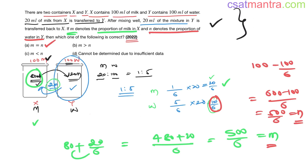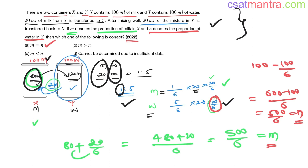To recap: initially 100 ml of milk in X; after transferring 20 ml, X has 80 ml. Y has 20 ml milk and 100 ml water in ratio 1:5. When transferring 20 ml of mixture back, milk taken = 1/6 × 20 = 20/6 and water taken = 5/6 × 20 = 100/6. So milk in X = 80 + 20/6 = 500/6, and water in Y = 100 − 100/6 = 500/6. Therefore m = n.